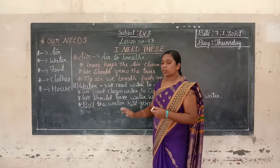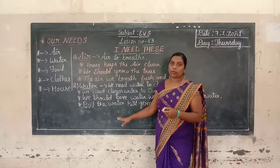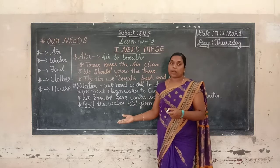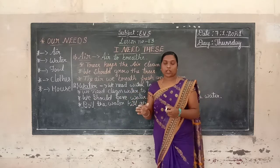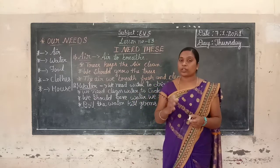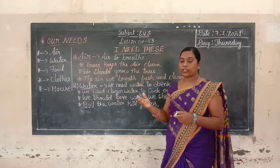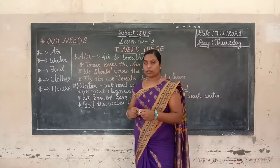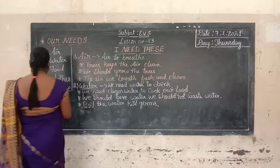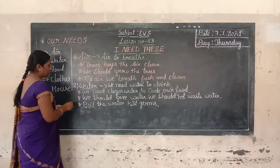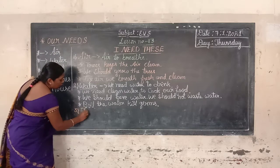Water is a very important thing to live — for all people, animals, and plants. We should use water in a good way and not waste it. Now let us look at another basic need — that is food. The third one is food.